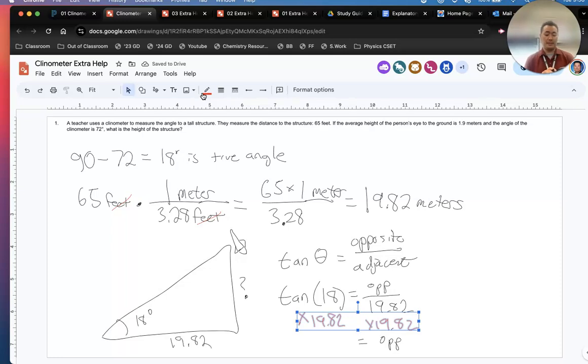You put in tan, 18, end parentheses, times 19.82, and it is 6.44. Yael taught you this? He taught you that? Yael, I have to make you a tutor. Because everything you taught him is fine.